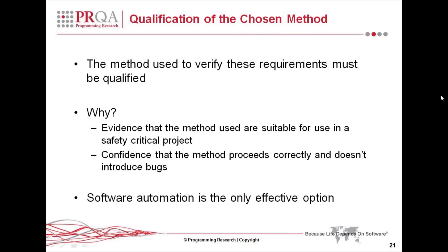The method you use to verify these requirements must also be qualified — for example, how you show that you have met the requirement of limited use of pointers. You need to provide evidence that the method you've used is suitable for a safety-critical project, and show confidence that your chosen method correctly executes without introducing bugs. For a small piece of code, say 100 lines, you can do this with manual inspection. But for any large code base, software automation is really the only effective option. So how would you go about choosing a software tool?